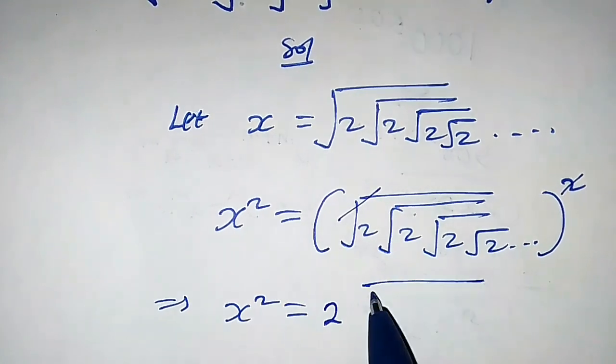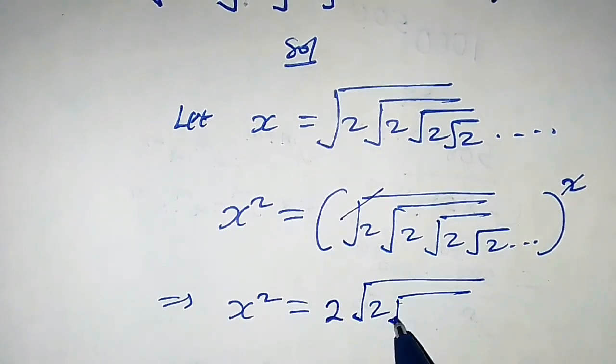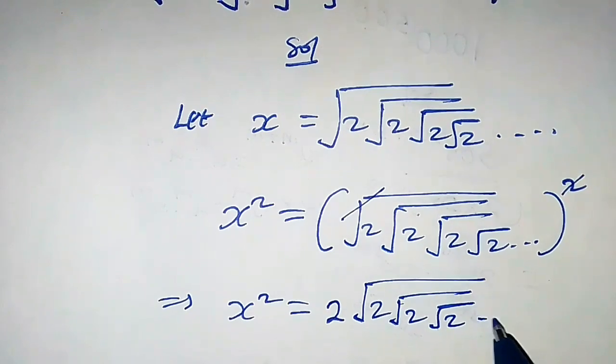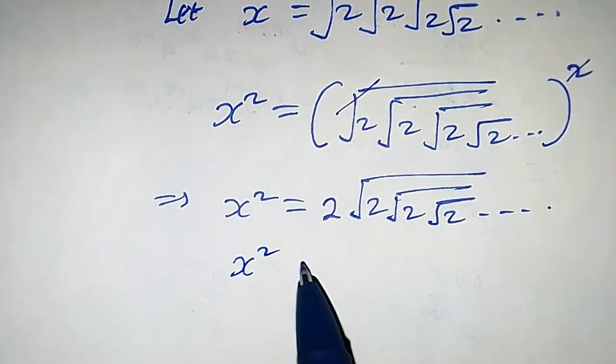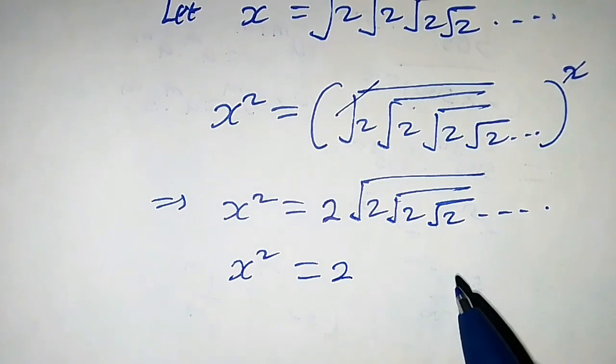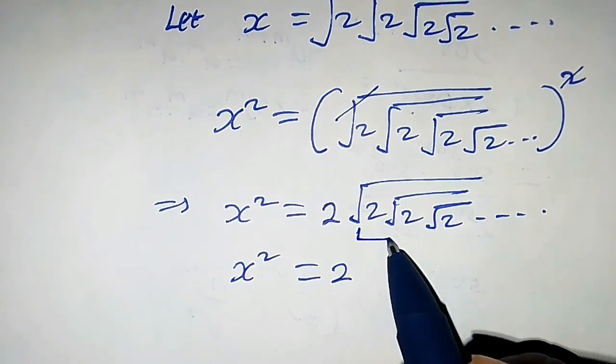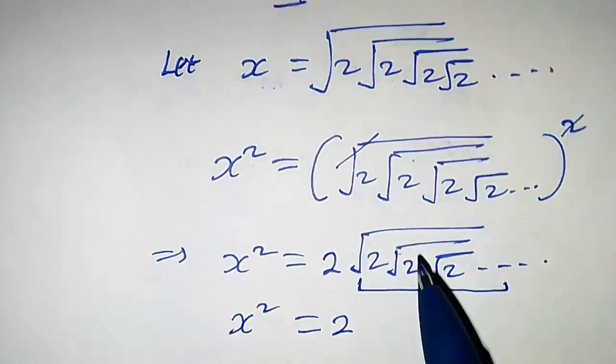Let's proceed further. We have x squared equals 2. You observe that this whole guy is exactly what we have here for x, so we're gonna have x in this equation.